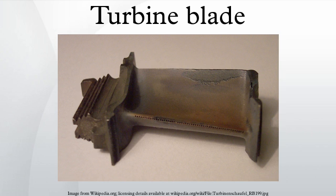The first TBCs, applied in the 1970s, were aluminide coatings. Improved ceramic coatings became available in the 1980s. These coatings increased turbine blade temperature capability by about 200 degrees Fahrenheit. The coatings also improve blade life, almost doubling the life of turbine blades in some cases.